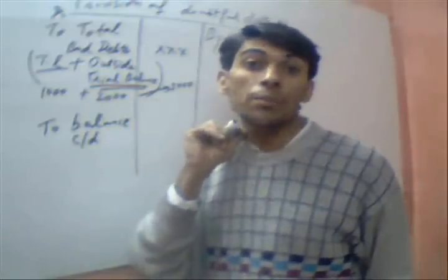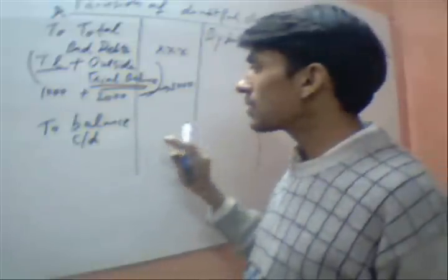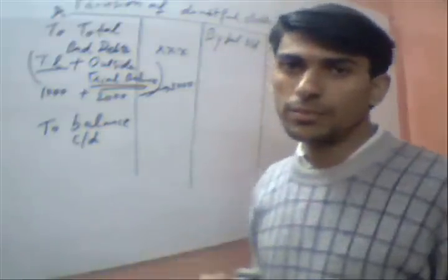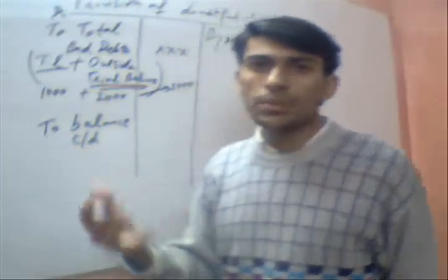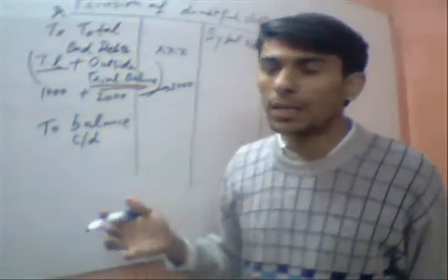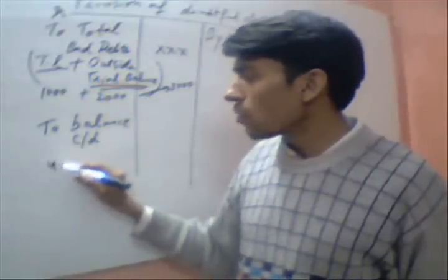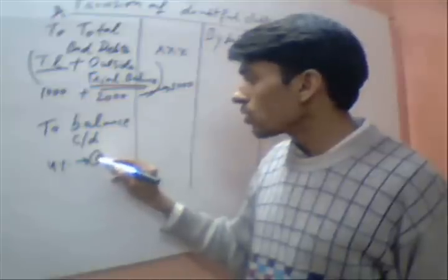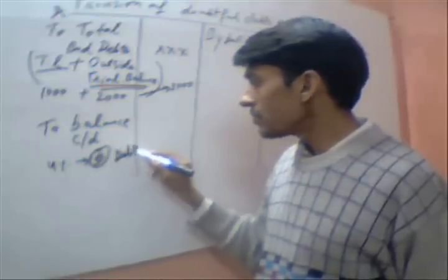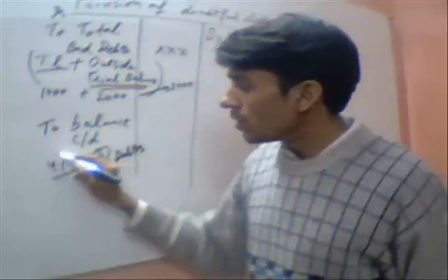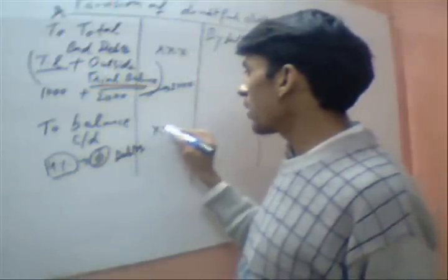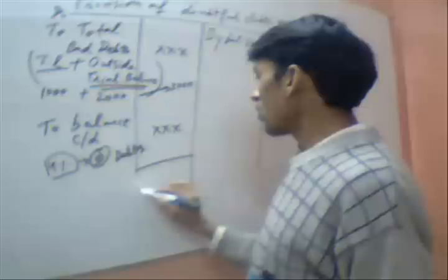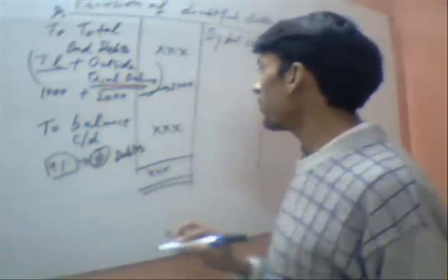This is a liability account and its balance will be on the credit side. According to the question, what is the percentage estimation for provision of bad debts — suppose it is 4% — then it will be calculated on the debtors figure. It may be any rate. Write the total of the debit side and the total of the credit side.